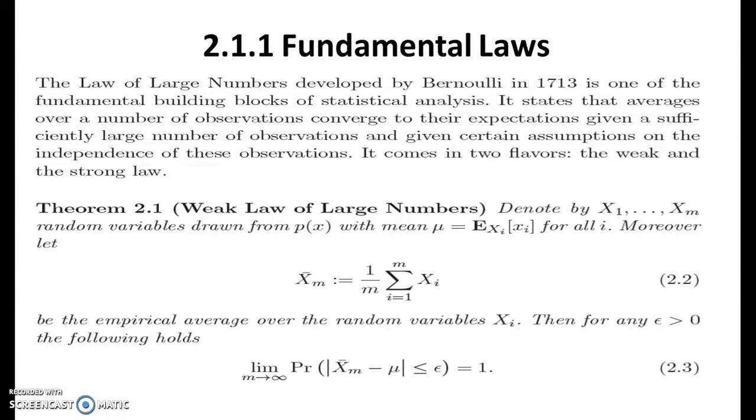The weak law of large numbers is something like denote by x1 to xm, random variables drawn from p of x with mean mu equals E of xi times xi for all i. Moreover, x̄m equals 1 by m sigma i equals 1 to m xi. This is the empirical average over the random variables xi. Then for any value epsilon which is greater than zero, the following holds: m leading to limit to infinity, the probability of x̄m minus mu less than or equal to epsilon implies equals 1. So this is the empirical average for the random variables xi.